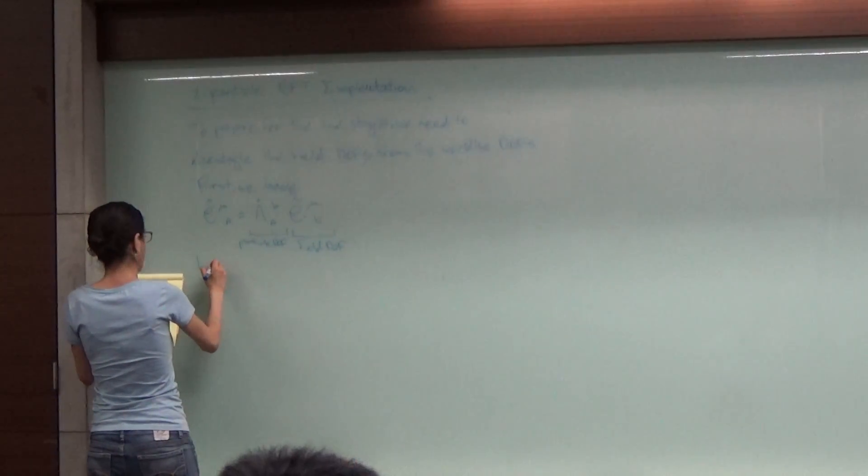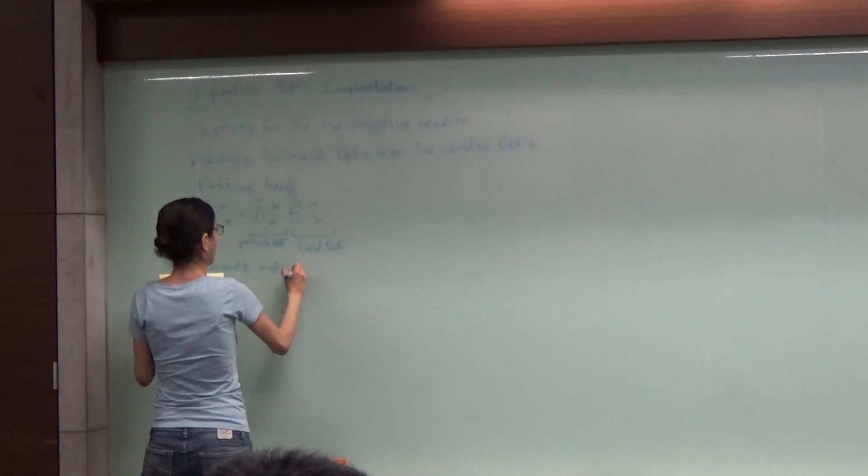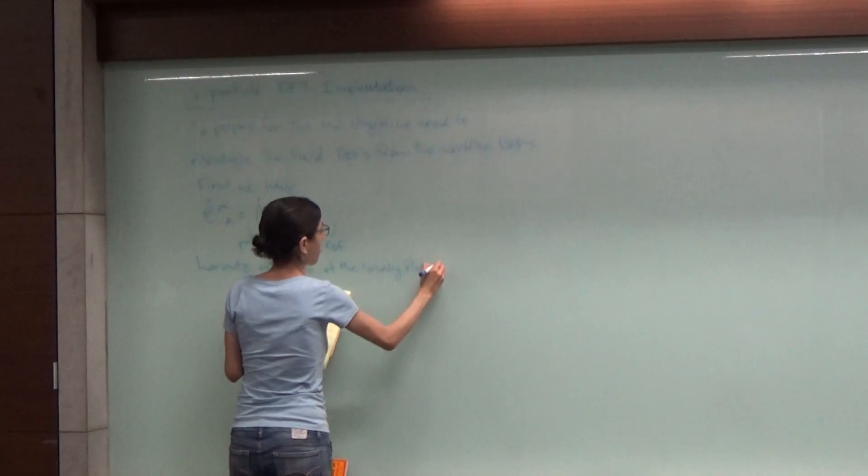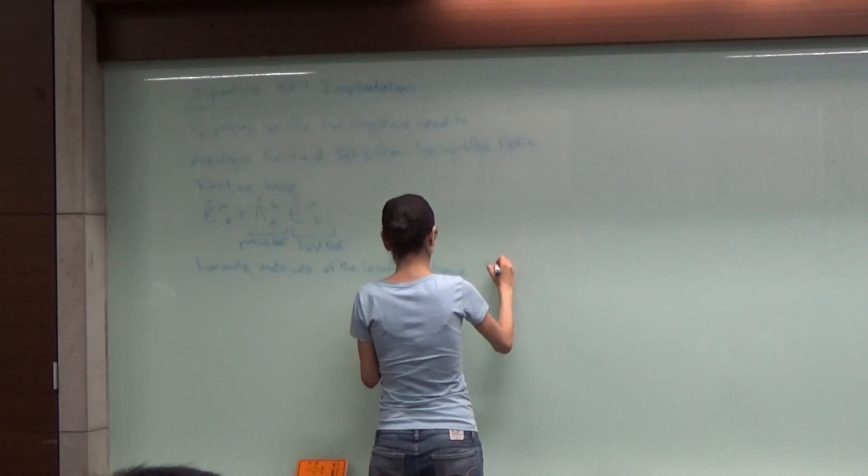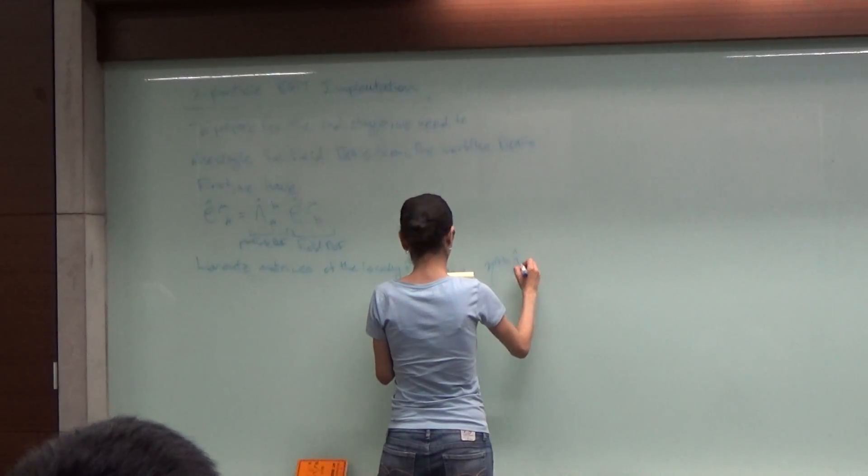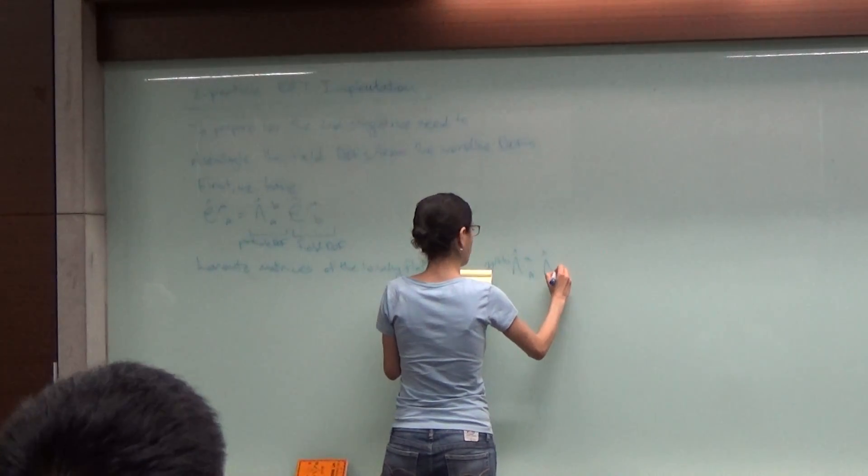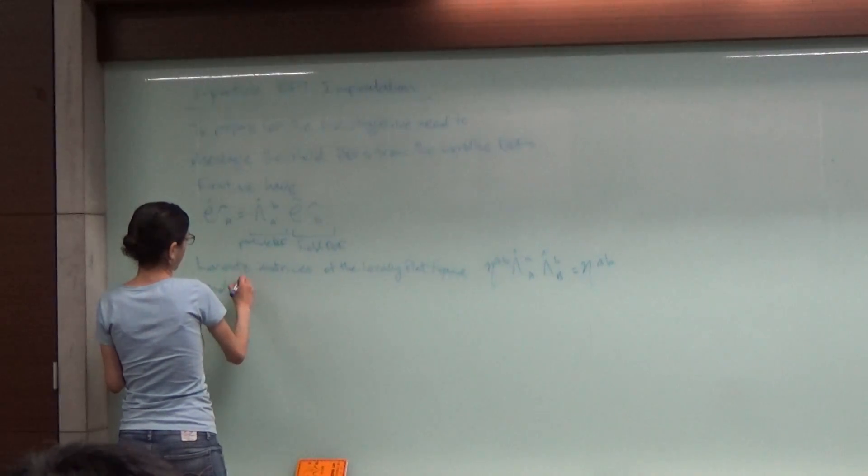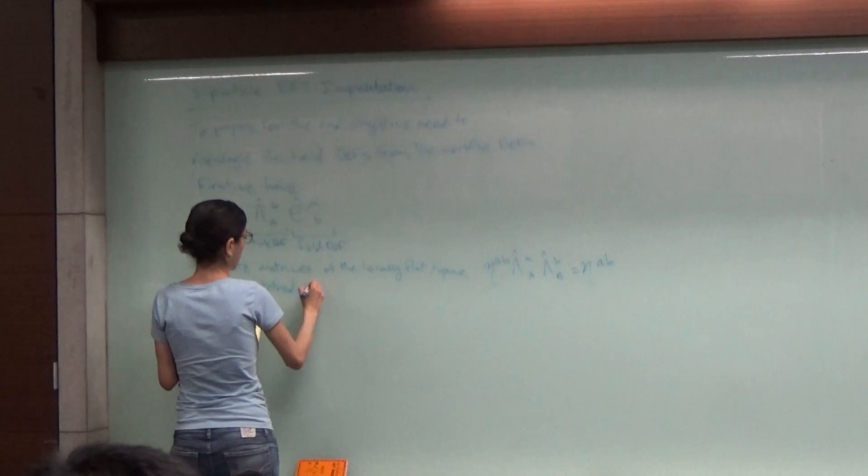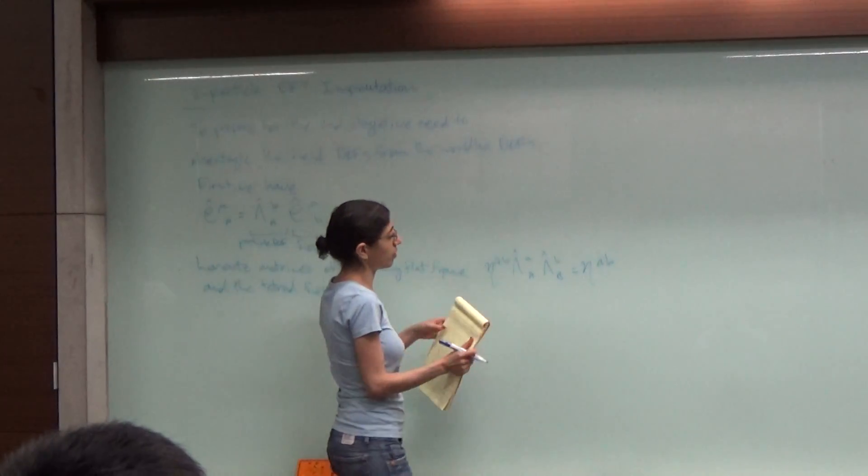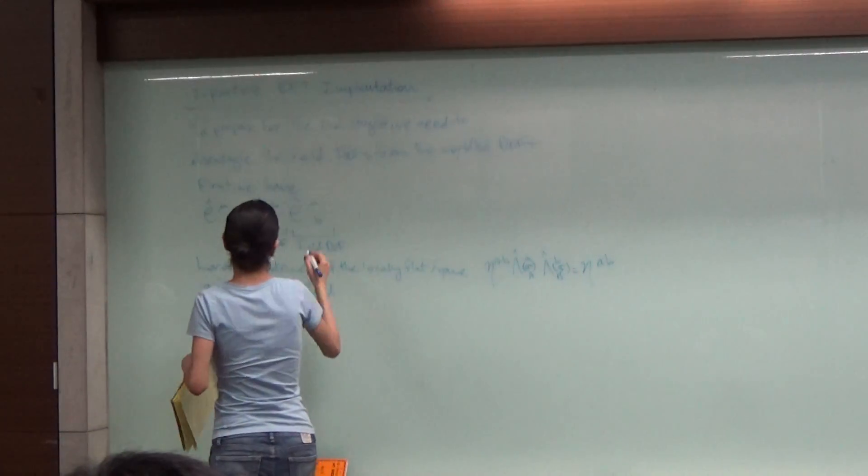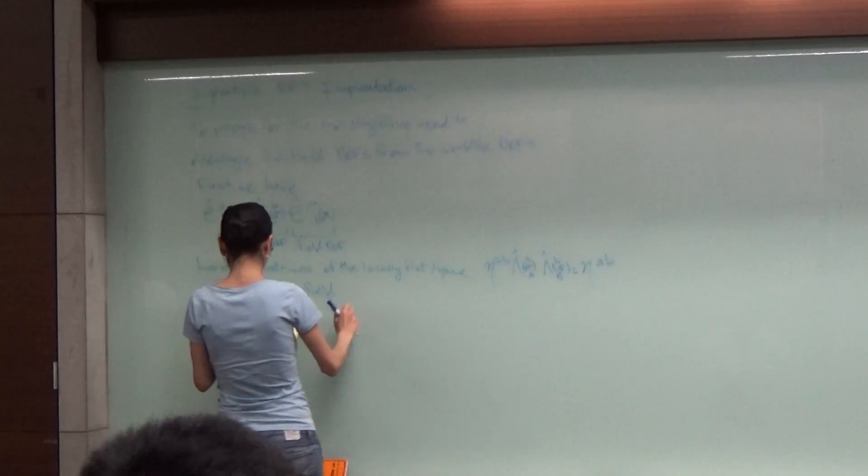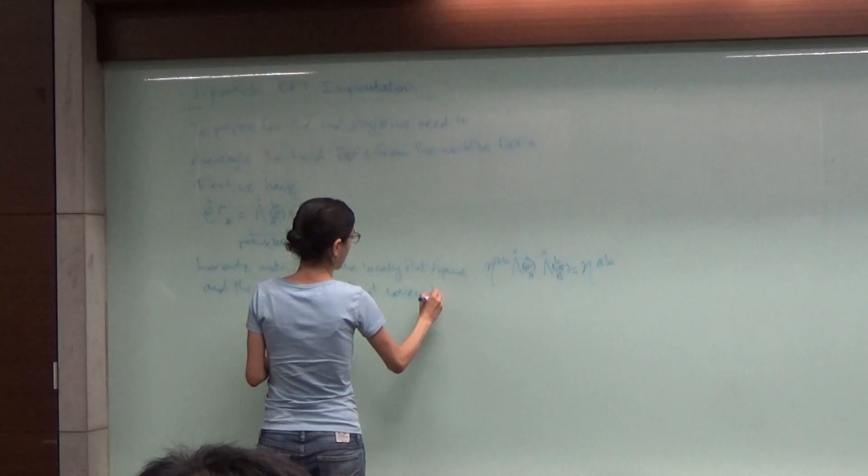Just to remind you the definition, the Lorentz matrices are defined so that they satisfy rotation between the frame. This is defined only on the worldline, where this is defined on the worldline that covers the entire manifold.